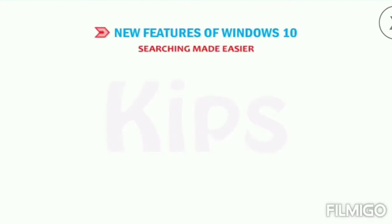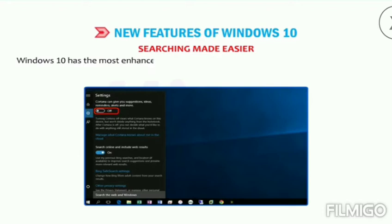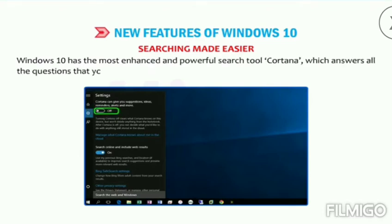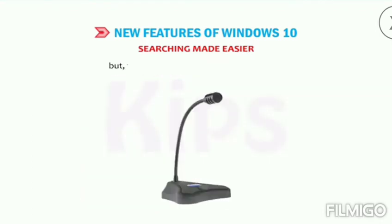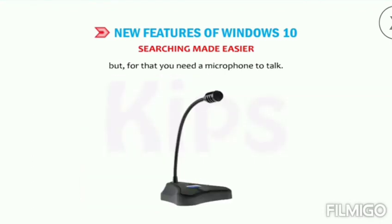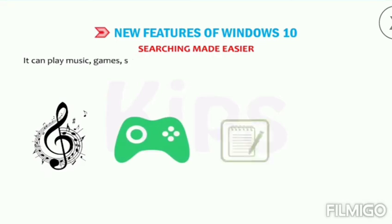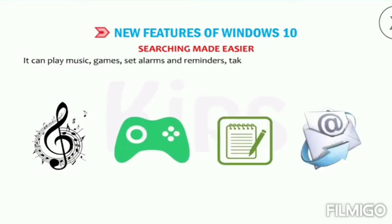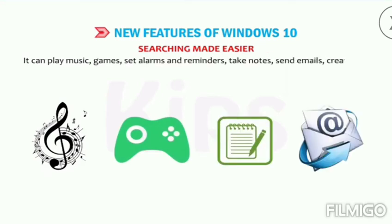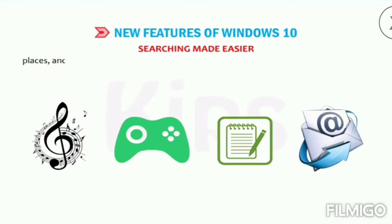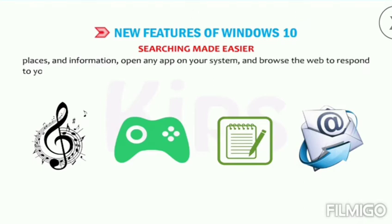Searching made easier — Windows 10 has the most enhanced and powerful search tool, Cortana, which answers all the questions that you ask either in text or verbally, but for that you need a microphone to talk. Cortana can play music, games, set alarms and reminders, take notes, send emails, create and manage lists, and find files, places, and information, open any app on your system, and browse the web to respond to your query.